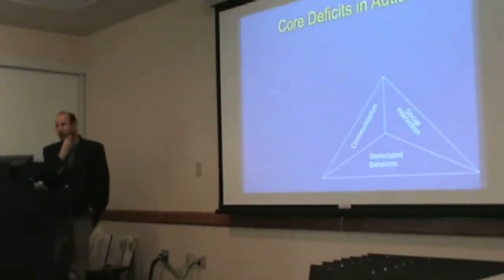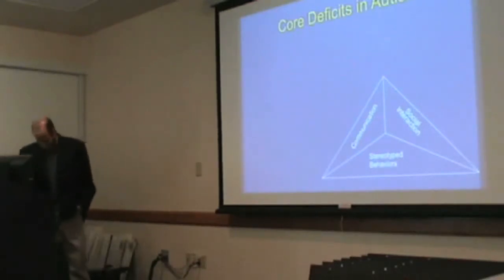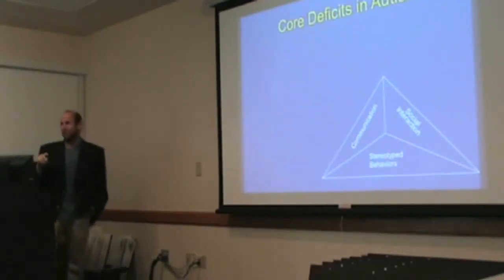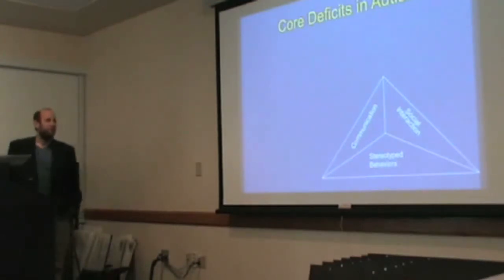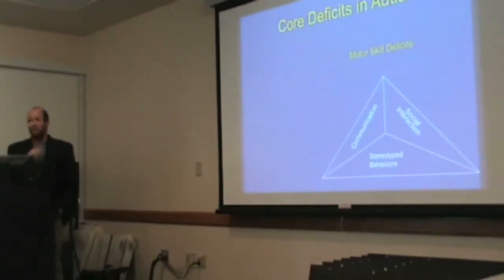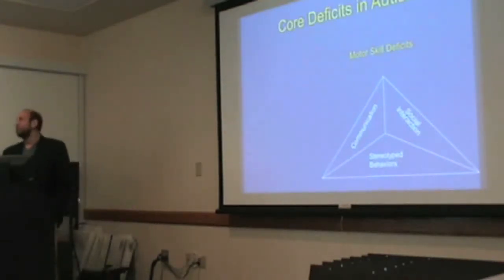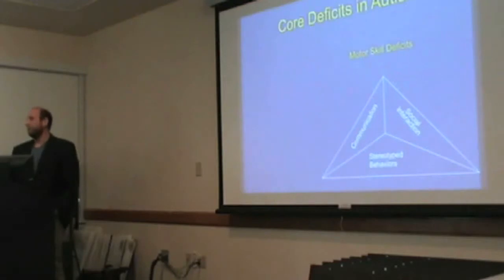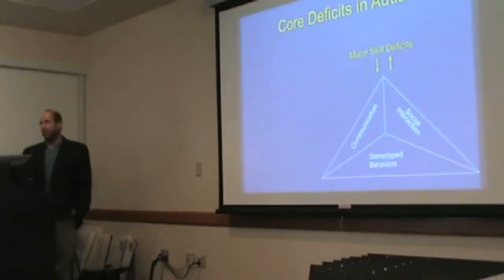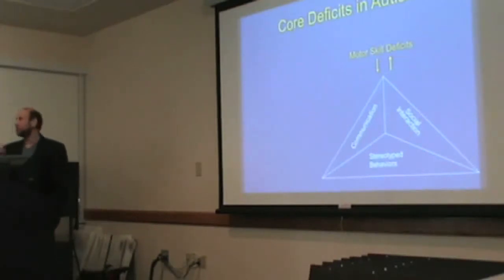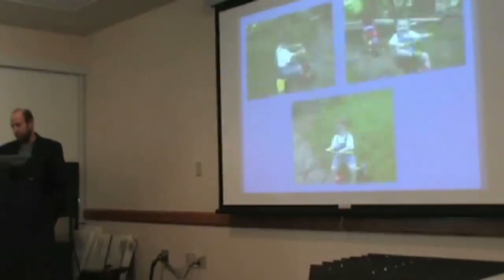In autism we have the core features — impairments of social interaction, communication, and stereotyped patterns of behavior. What is increasingly recognized, though not yet part of the core features, is that many of these children have impairments in motor function. Over this talk I'll discuss the types of motor dysfunction these children present with, and the interrelationships of these motor functions with the core social communicative impairments.